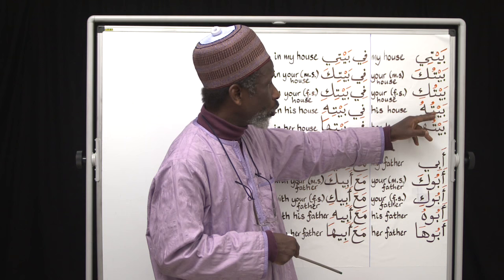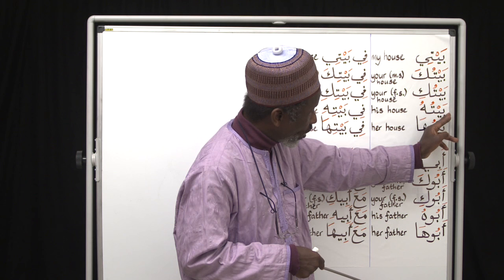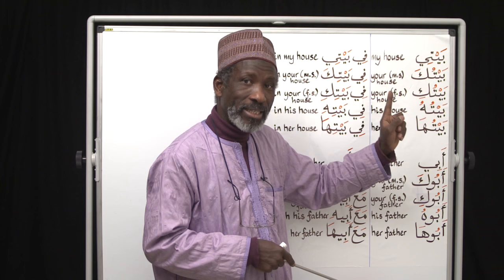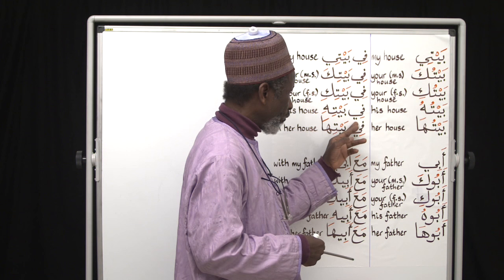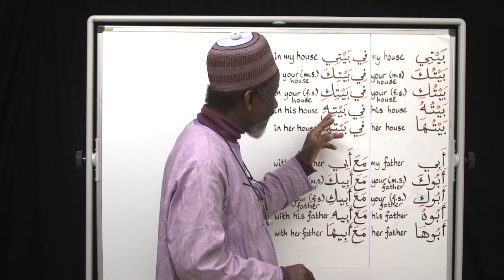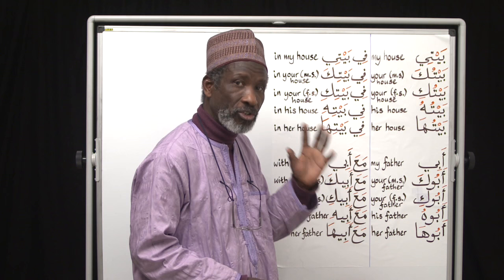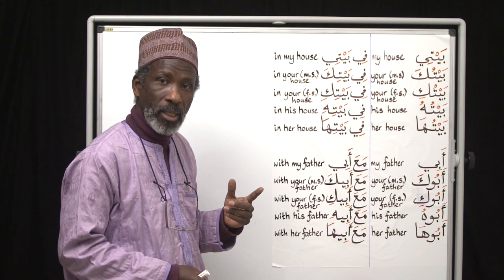Baituhu means 'his house' — baitu is the house, and there is no preposition before it so it keeps its original 'u'. When we have the intrusion of fi, a preposition, fi baiti... pay attention here. The 'i' ending is fine, but the 'hu' is changing — this is very confusing, but thankfully there are not many cases like this.